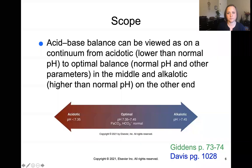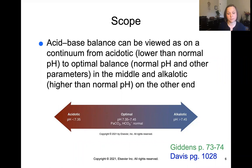In terms of the scope of this concept, we need to remember some key numbers. The most important one is the normal pH for the body — it's 7.35 to 7.45. Our optimal acid-base balance, right in the middle, is that range of 7.35 to 7.45.